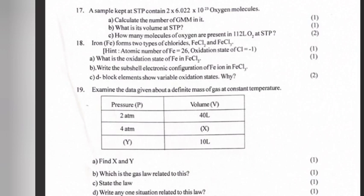17. A sample kept at STP contained 2 × 6.022 × 10²³ oxygen molecules. a) Calculate the number of GMM in it. b) What is its volume at STP? c) How many molecules of oxygen are present in 112 liter O₂ at STP?